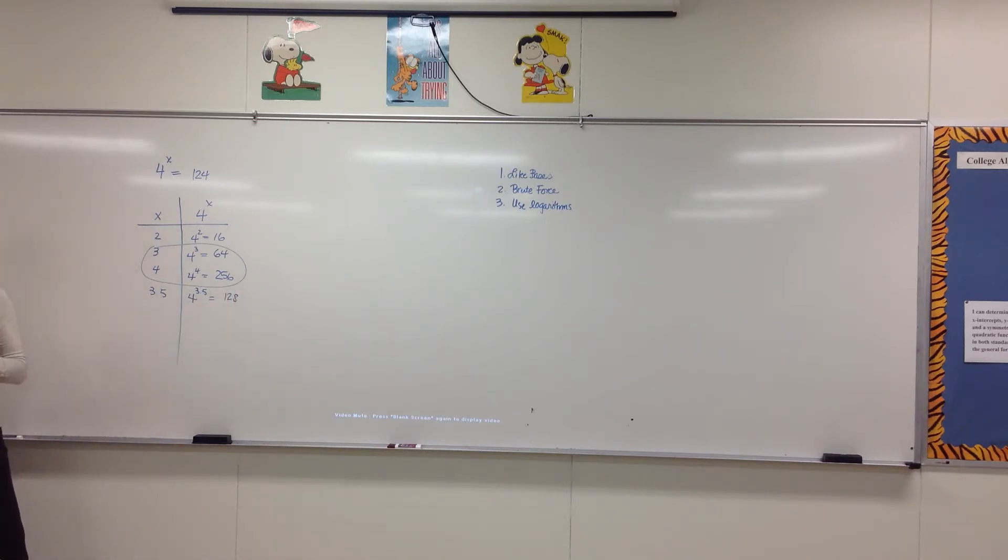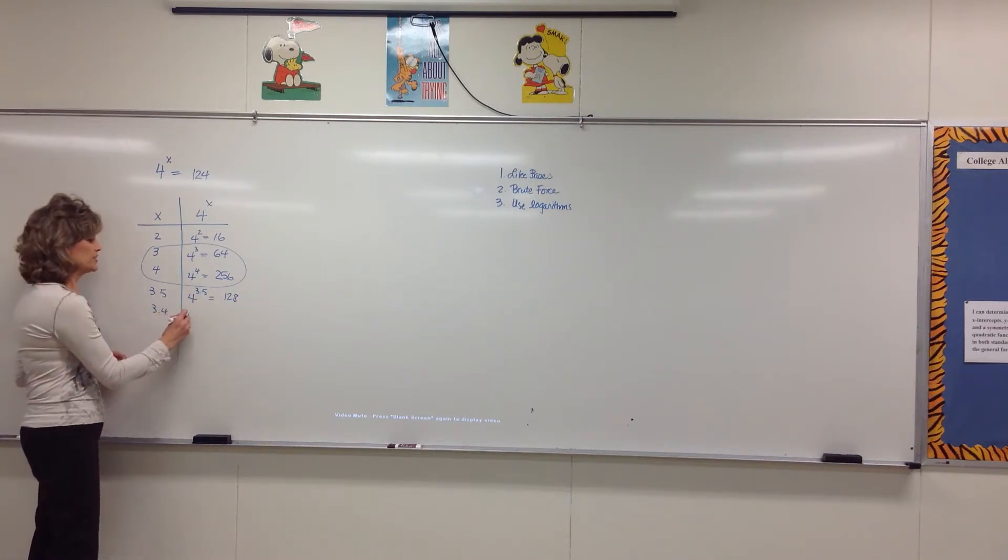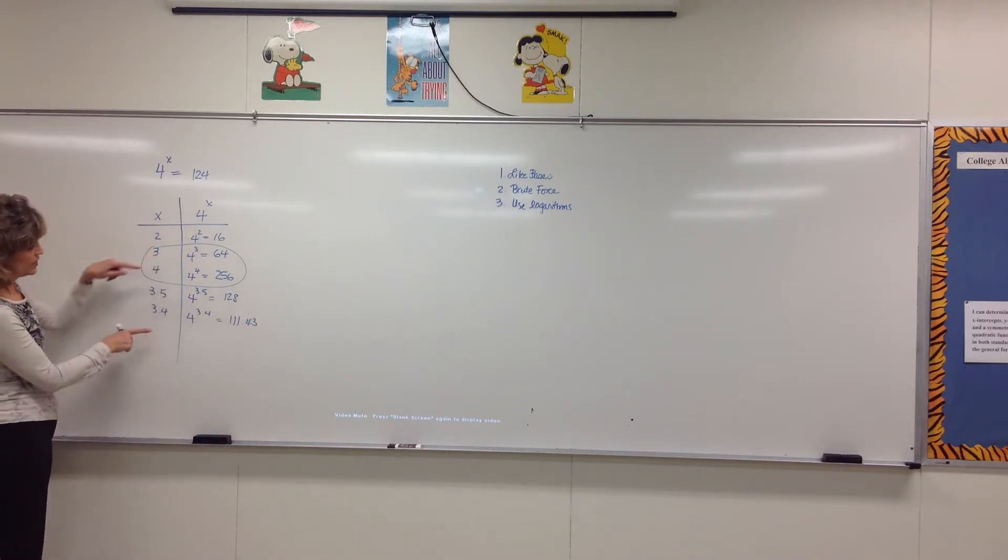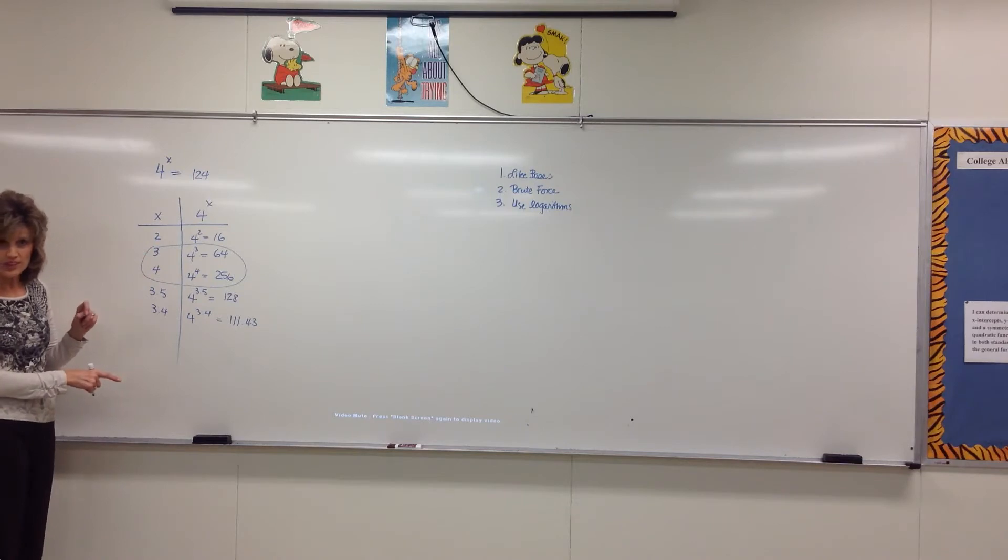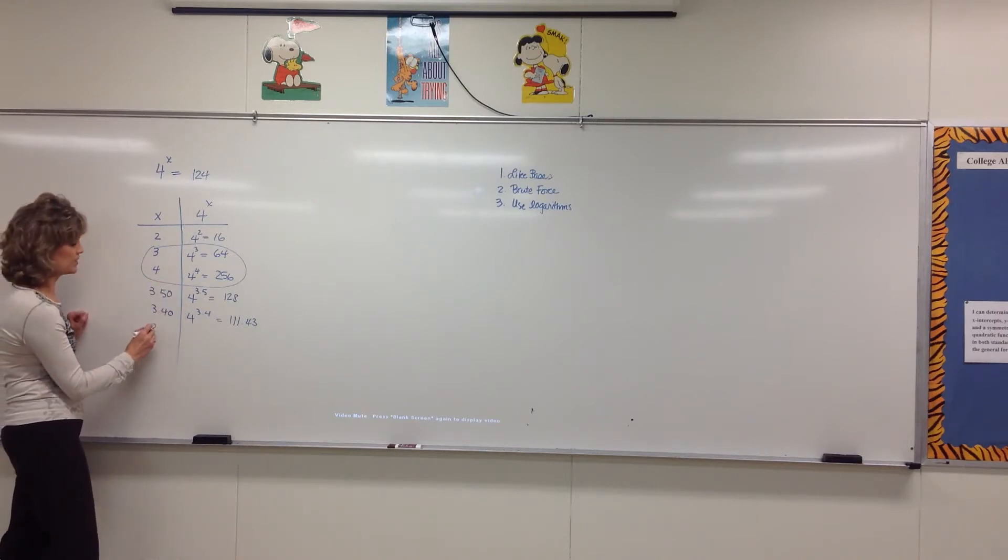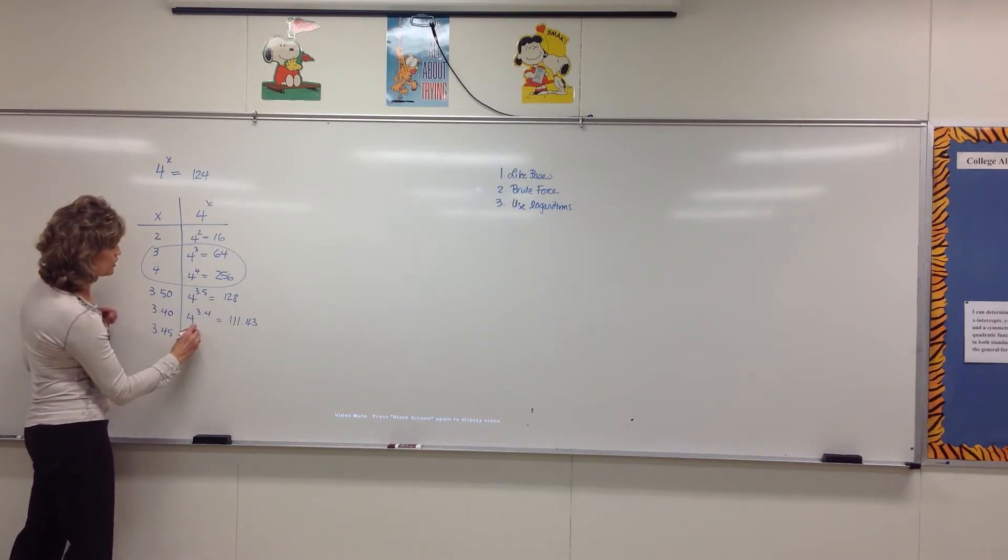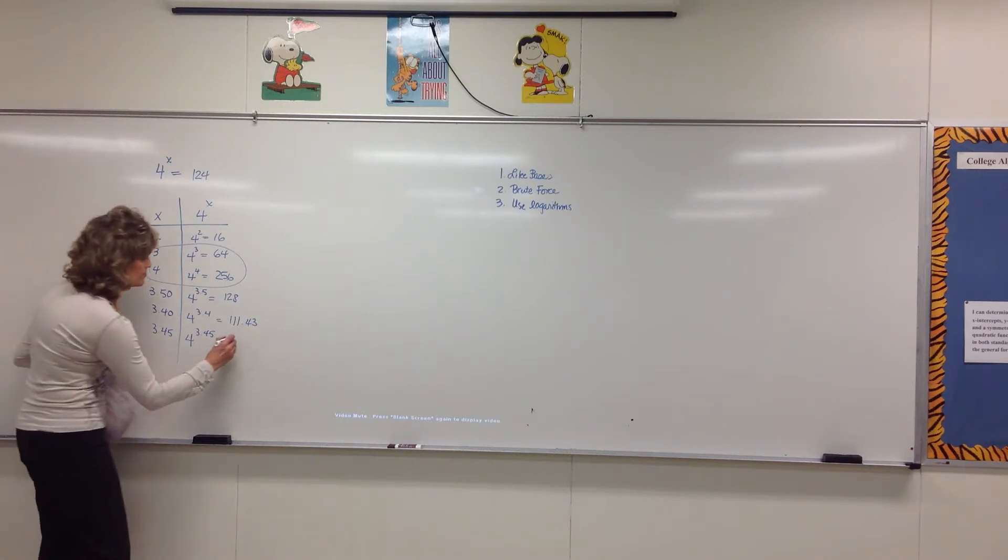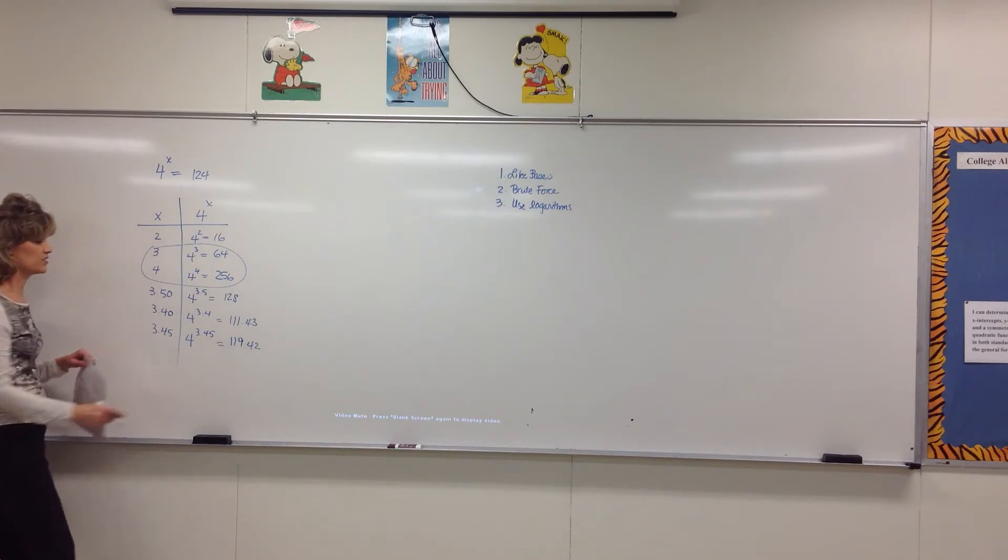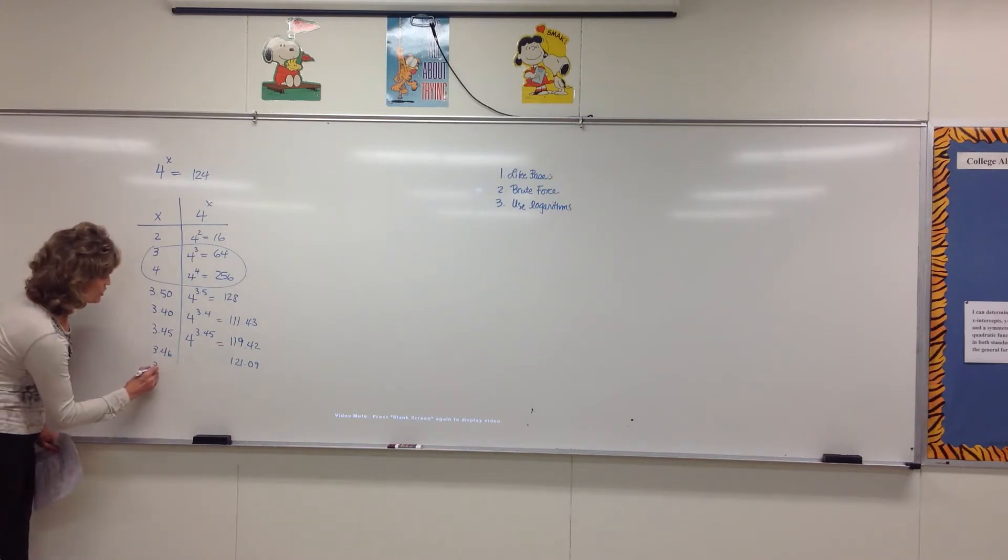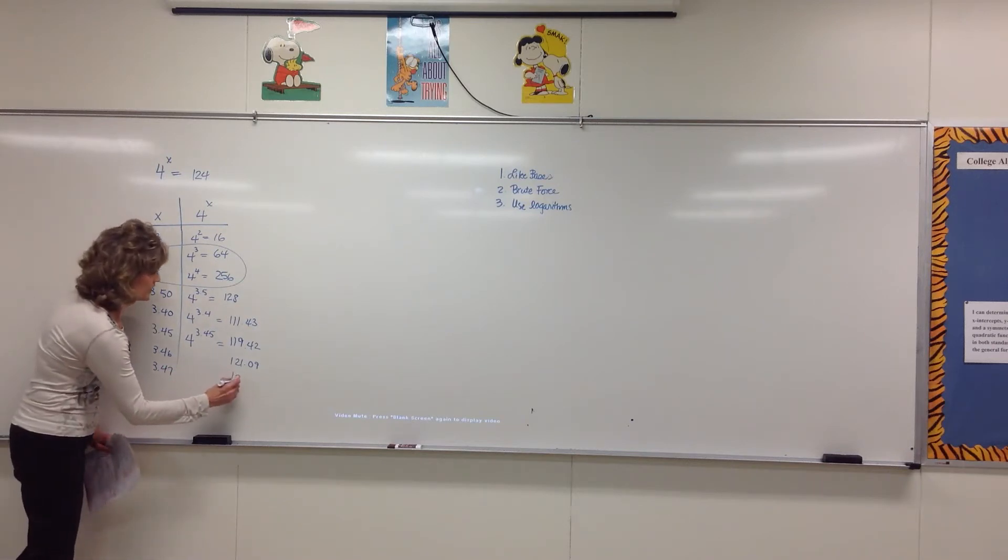That's a little big, right? So let's go down a little. Let's make our exponent maybe 3.4. Somebody tell me, what is 4 to the 3.4 power? 111.430. Guess what? 3.4 is too small, 3.5 is too big. We need something between those. So we're going to think of this as 3.40 and 3.50 and go somewhere between 40 and 50. Let's try 3.45. 4 to the 3.45 power, what do we get? 119.42 something. A little small. So let's try maybe 3.46. 121.09. Still a little small. Let's try 3.47. 122.7.